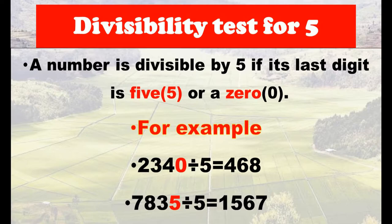Divisibility test for five: a number is divisible by five if the last digit is five or zero. For example, 2,340 divided by 5 equals 468 — this number is divisible by five because it ends with zero. In our second example, 7,835 divided by 5 equals 1,567 — this number is divisible by five because it ends with five.